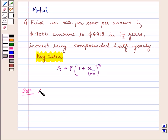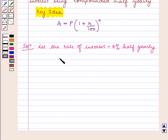So let the rate of interest be equal to R percent half yearly. Then the rate will be equal to 2R percent per annum.